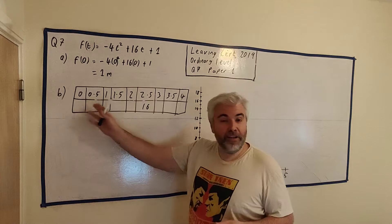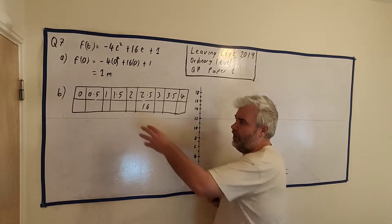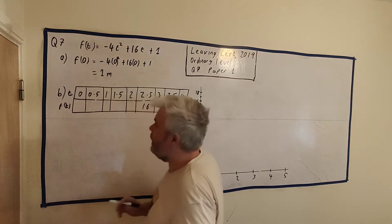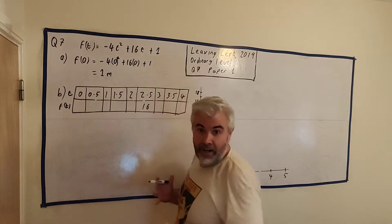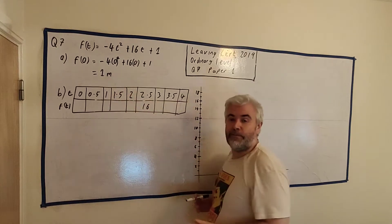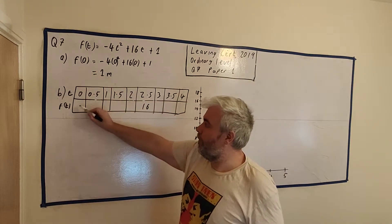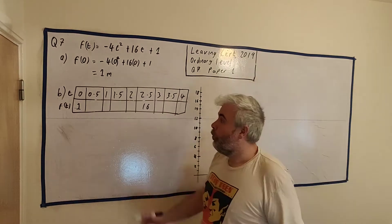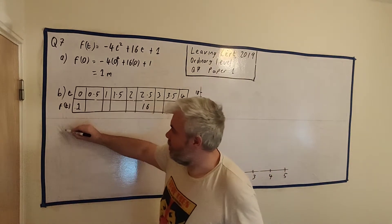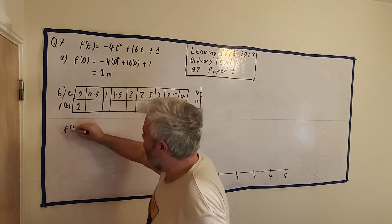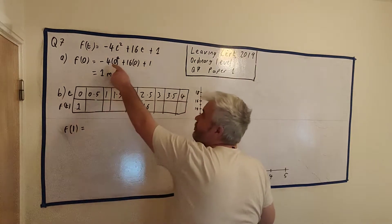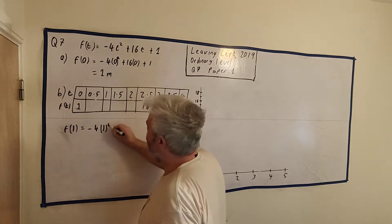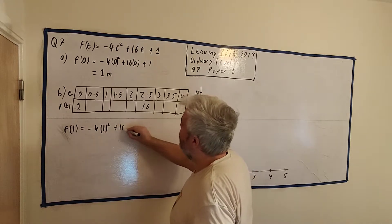Part B asks us to fill this table out. This table has columns for t and f(t) — really it's time and the height. We've just done one of these parts, putting t = 0 in, so that means this number here is one. We need to do the same thing for each value. We have to do f(1): minus four times one squared, plus sixteen times one, plus one.